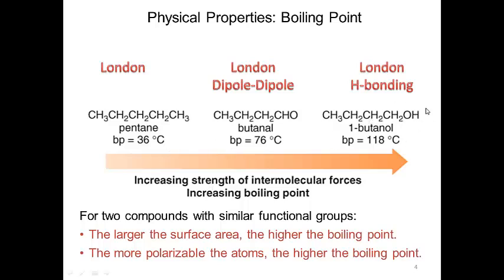Going from butanal to 1-butanol, you move from dipole-dipole to hydrogen bonding. The boiling point jumps from 76°C to 118°C. The O–H can hydrogen bond with another O–H group — the alcohol hydrogen bonds with another alcohol — setting up a network that makes it more difficult to pull those molecules apart, increasing the boiling point.